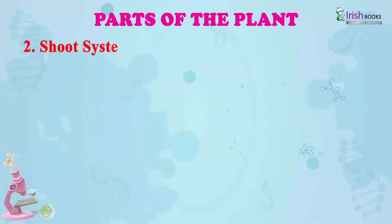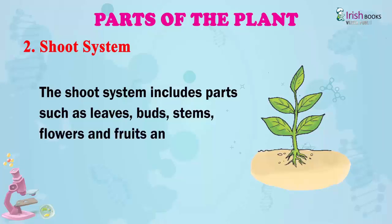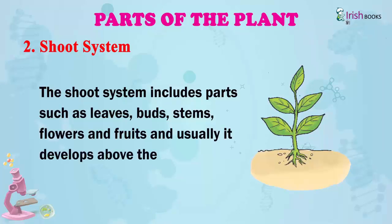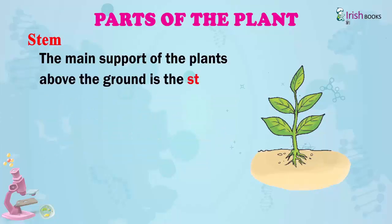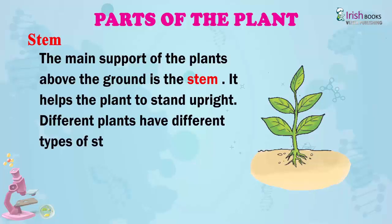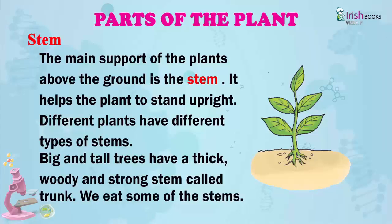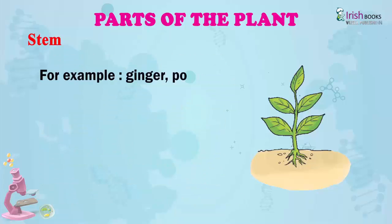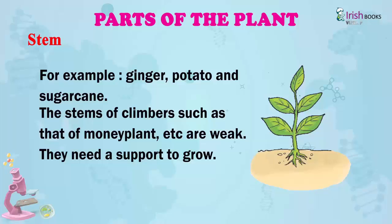Shoot system. The shoot system includes plant parts such as leaves, buds, stems, flowers and fruits, and usually it develops above the ground. The main support of the plant above the ground is the stem. It helps the plant to stand upright. Different plants have different types of stems. Big and tall trees have a thick, woody and strong stem called trunk. We eat some stems, for example ginger, potato and sugar cane. The stems of climbers such as that of money plant are weak and need a support to grow.